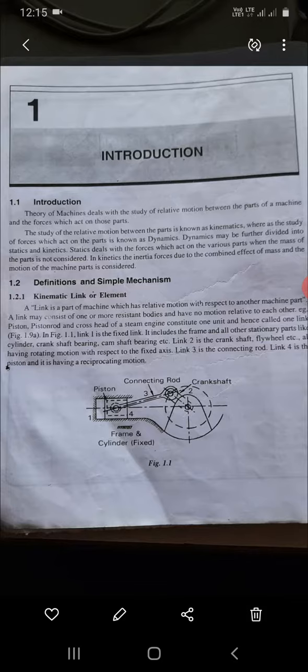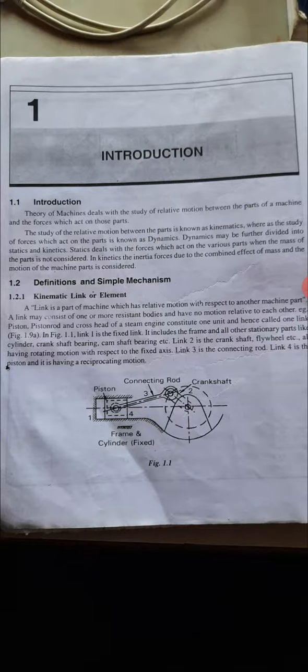For example, piston, piston rod, crosshead, and stimulus constitute one link. Link 1 is fixed, which includes the frame. Link 2 is the crank shaft. Link 3 is the connecting rod and Link 4 is the piston.